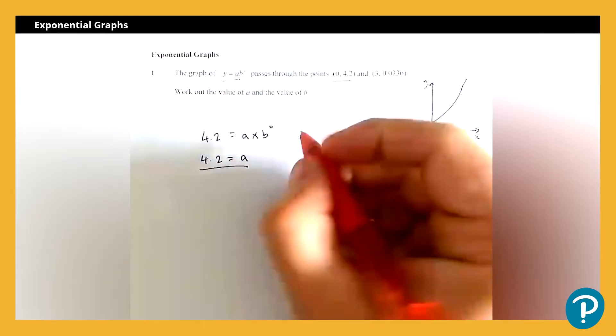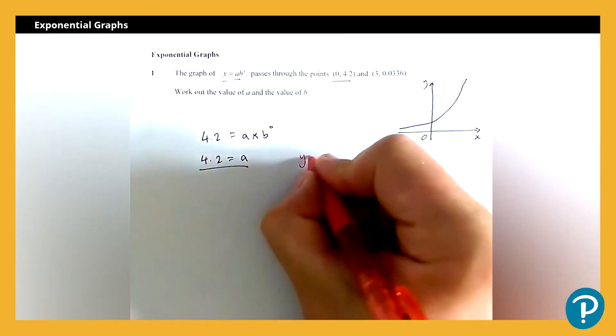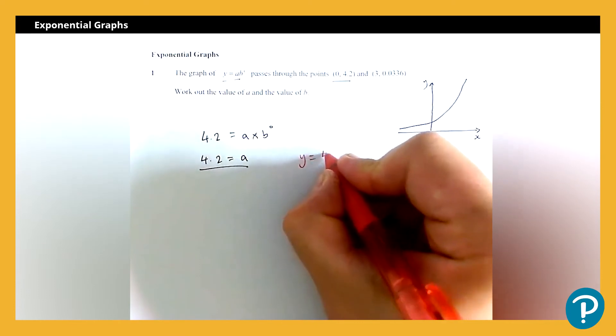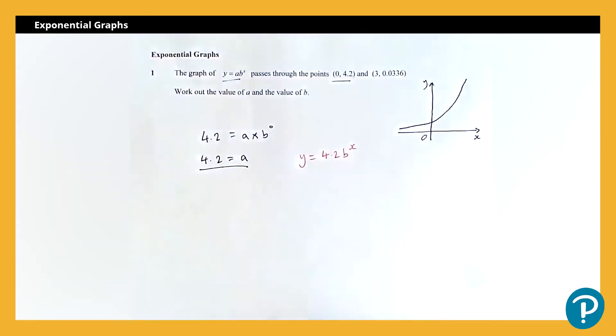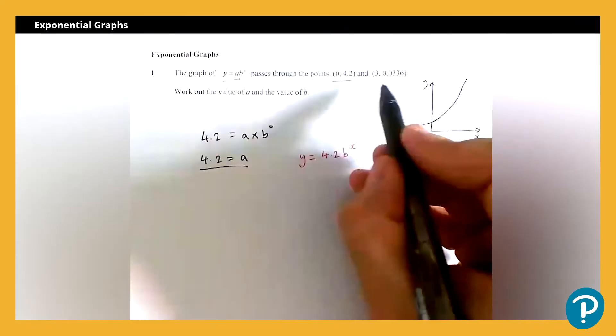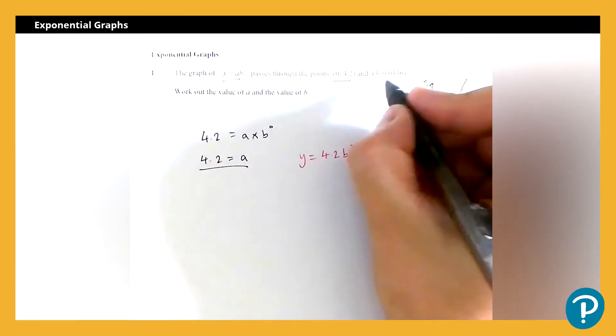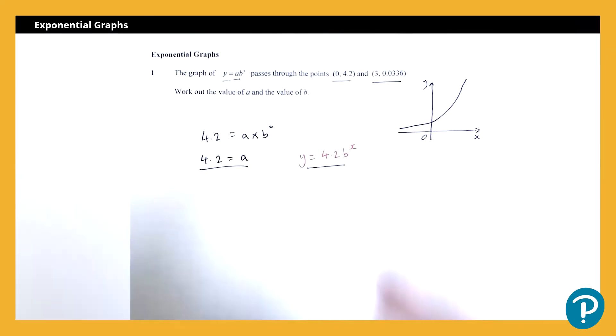I could now if I want to, could rewrite that equation as y equals 4.2 times b to the power x. We're now going to use our second set of coordinates, but I'm going to substitute into this equation now.